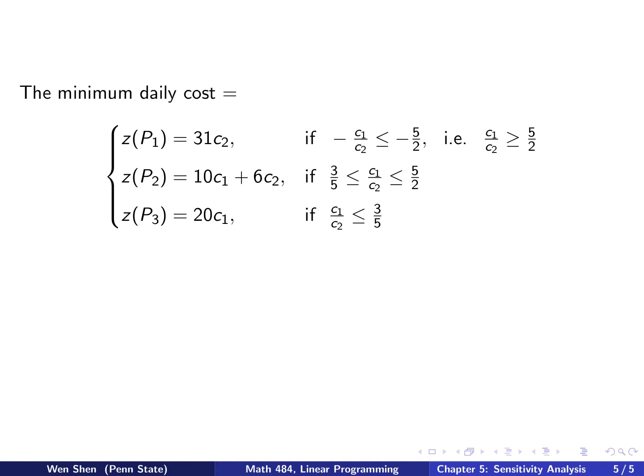Let's summarize and put in the numbers. What will be the minimum daily cost? Three situations. It will be the Z value at P1, which is 31 times C2, if S3 is less than S1. If we put it in, we see that there are two negative signs, so we can multiply both sides by a negative sign and actually have this relation, a constraint on the ratio C1 over C2. The second case, the minimum is obtained at P2, then it's 10C1 plus 6C2, and this is the case where this ratio is between those two. And the last one is at P3, that's 20C1, when the ratio is less than 3 over 5.